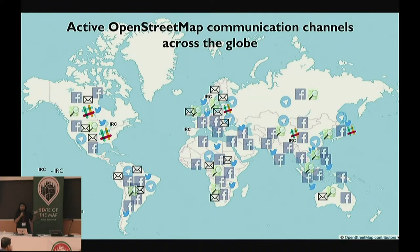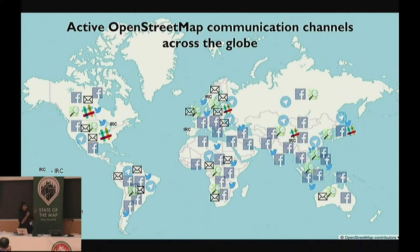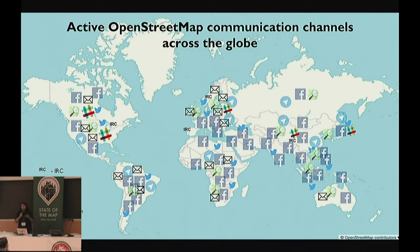So here is a map. Disclaimer that this map is not an accurate one — it's just to showcase different communication channels that are spread across different regions of the world, and how the local communities are actually using them. There's Facebook, there's Slack, there's Telegram, there's Forum, there's IRC, there's Twitter. All of these communication channels have a unique application that the community uses them for — some are used to share events, some to ask questions, and each community has their own way to do it.